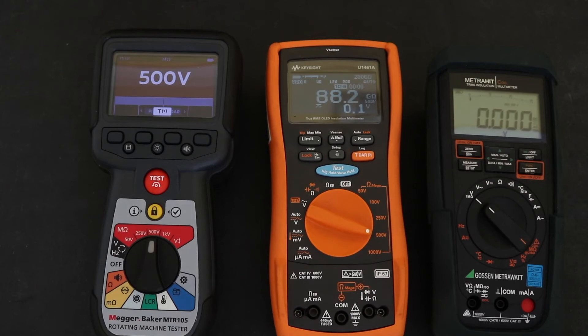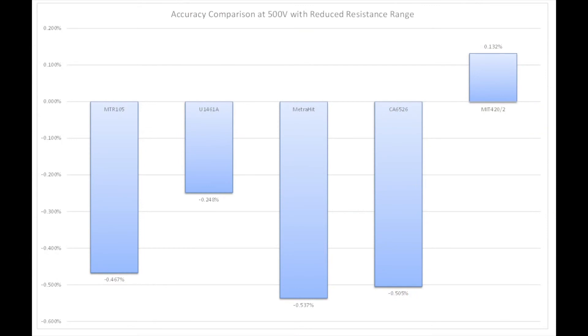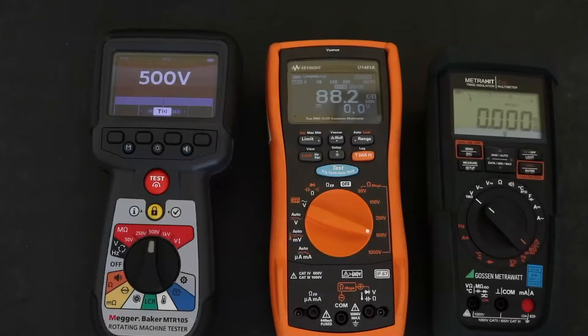So to include the Metrahit coil into the equation, what I actually do is reduce the test range down to the 3 giga ohm that the Metrahit can test up to. You can see here all I've done is given the overall accuracy comparison across this reduced test range. You can see actually the MTR105, much more accurate down at the bottom end, is more accurate than the Metrahit unit and the Chauvin Arnoux unit, not as accurate as the Keysight unit at 0.248%, but the MIT 420 again comes out on top, is more accurate than all four of these units and is actually the cheaper tester of the bunch as well.